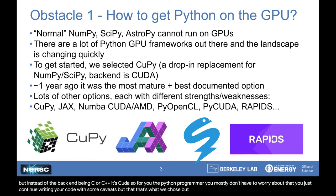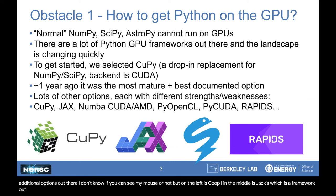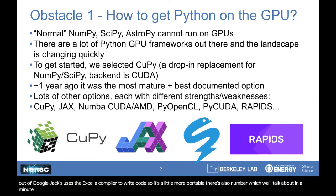In case you're wondering, there are quite a few additional options out there. On the left is CuPy. In the middle is JAX, which is a framework out of Google — JAX uses the XLA compiler to write code, so it's a little more portable. There's also NumPy, which I'll talk about in a minute. And if you're a Scikit-Learn or Pandas user, you might consider NVIDIA Rapids. So there's really no one answer.